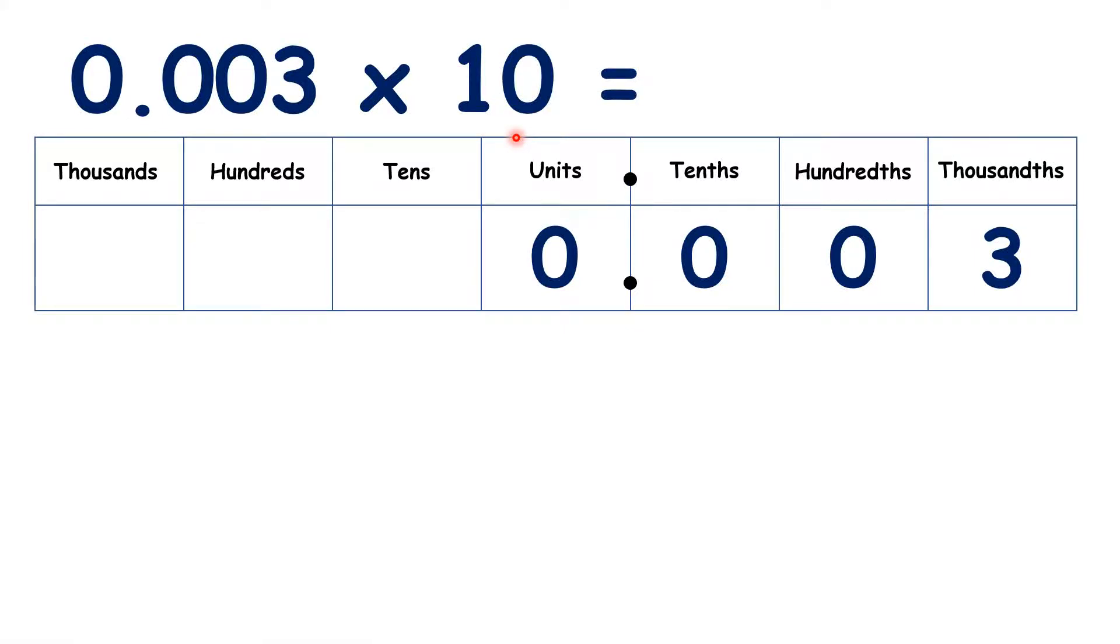When we multiply by 10, the digits move one place to the left. So we have 0.003 on our place value chart, and if we move the digits one place to the left, we now have 0.03.